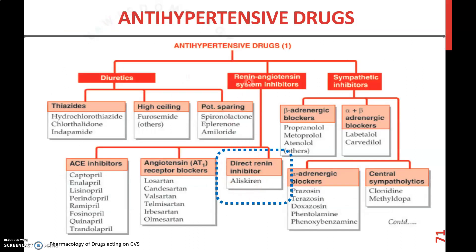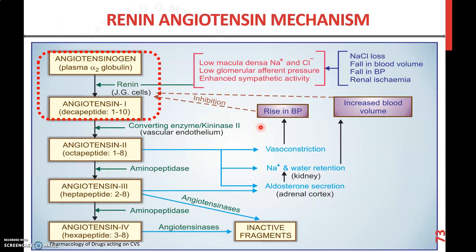In this video, we discussed the different drugs acting on the renin-angiotensin system. These are the three classes: ACE inhibitors, angiotensin receptor blockers, and direct renin inhibitors. We will discuss the rest of the classification in another video.